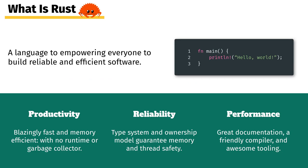What is Rust? According to their website, Rust is a language that empowers everyone to build reliable and efficient software. This empowerment stems from its three defining characteristics. First of all, Rust is a compiled language and, like C and C++, has no runtime and no garbage collector.